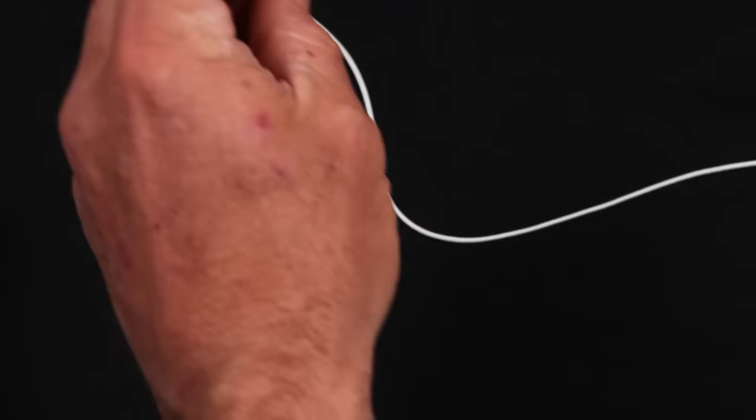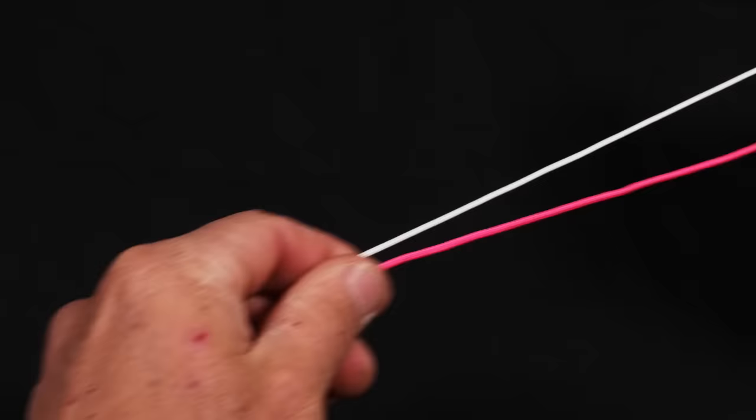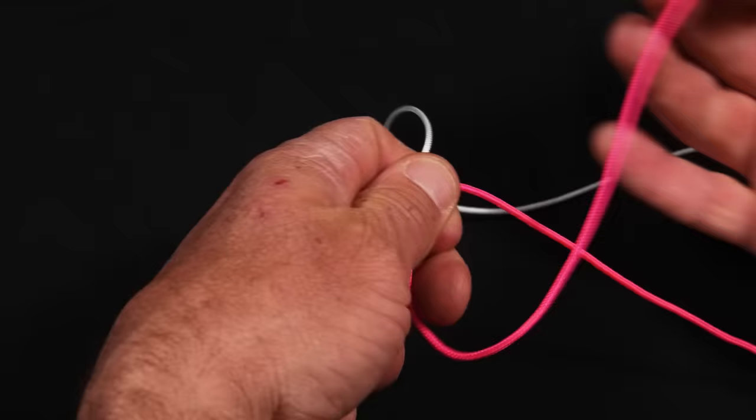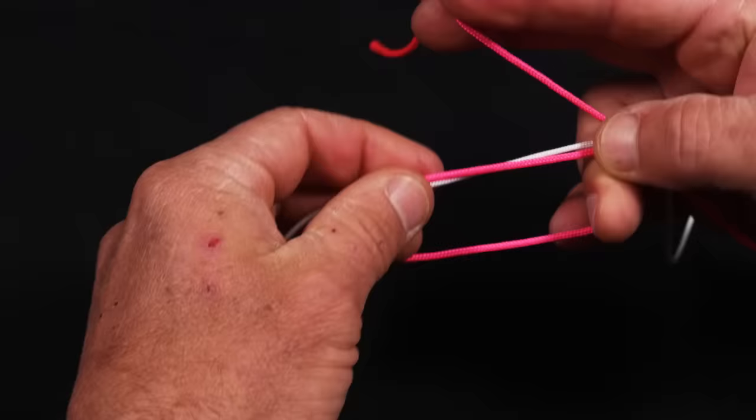So a double Uni knot is when you lay two lines parallel to one another. The pink line could be braid, it could be monofilament, it could be heavier monofilament, lighter monofilament, fluorocarbon, whatever. I'm going to take one of the lines, let's start with the pink one, and I'm going to roll it under just like I did on the last one.